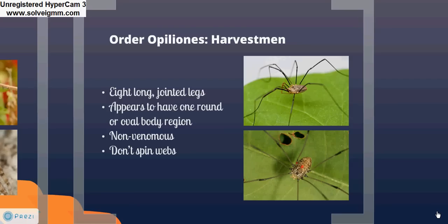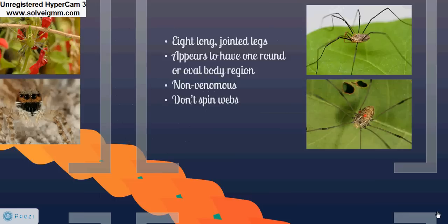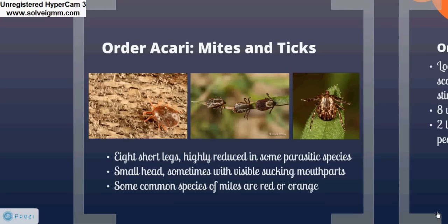Note the two small red-orange circles on the body of the harvestmen in the lower photo. These are another type of arachnid: mites. Mites are in the order Acari, along with ticks. They have eight shorter legs, often highly reduced in parasitic species, and a rounded body with a small head. Some common species can be red or orange, as seen on the harvestmen.